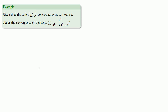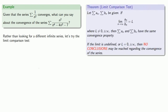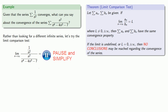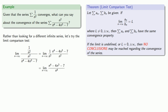Rather than trying to find a different infinite series, let's try the limit comparison test. We'll look at the limit as n goes to infinity of the ratio of the terms of the two series — 1 over n squared to n squared over n to the 4th minus 4n cubed minus 7. We'll do a little algebra, and now we need to find this limit as n goes to infinity.